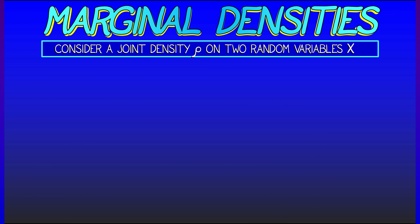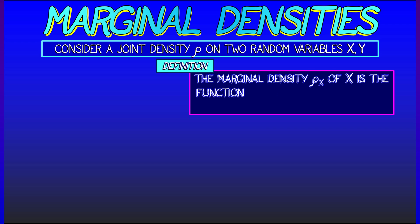Consider the case where we have two random variables, x and y, with a joint density rho on the plane. We're going to define the marginal density on x, rho sub x, to be the function given by integrating the joint density to eliminate all y dependence.